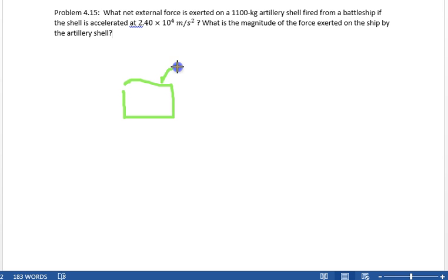So, battleship fires off an artillery shell, boom, we get 2.4 times 10 to the 4th meters per second squared.